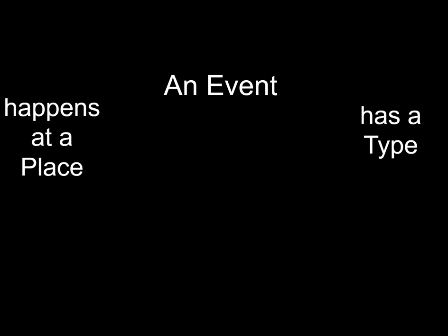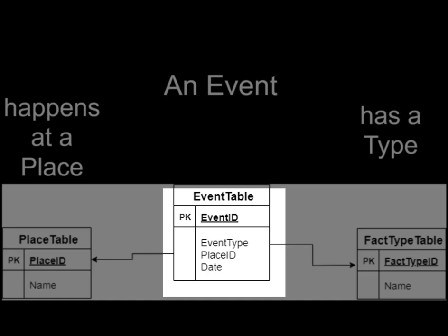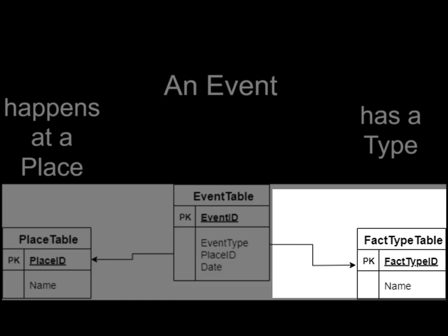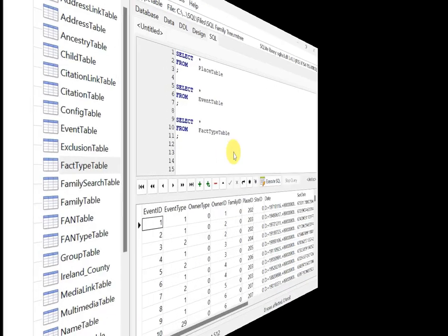An event has a type — birth, marriage, death — and it happens at a place. The entity relationship diagram shows the event table in the middle with event type, place ID, and date. The event type is a lookup to the fact type table, where for example type 1 is birth. On the left, there's a link from the event table to a specific place ID, around number 201-202 in my tree for actual recorded places.